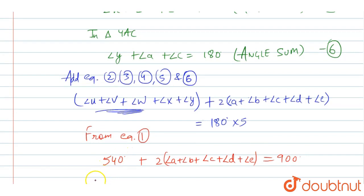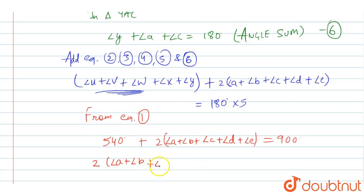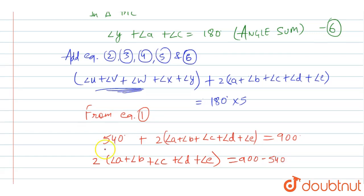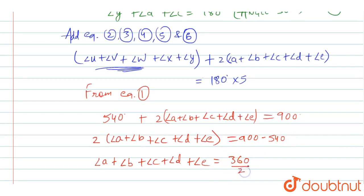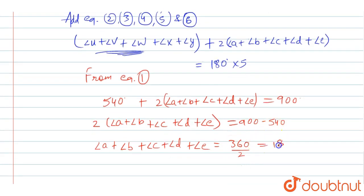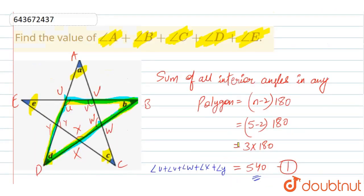Taking 540 to the right-hand side: 2 times (angle A + angle B + angle C + angle D + angle E) equals 900 minus 540, which is 360. Dividing both sides by 2: angle A plus angle B plus angle C plus angle D plus angle E equals 180°. This is our final answer.